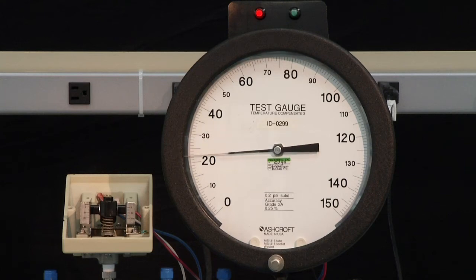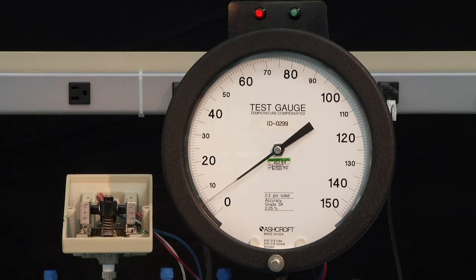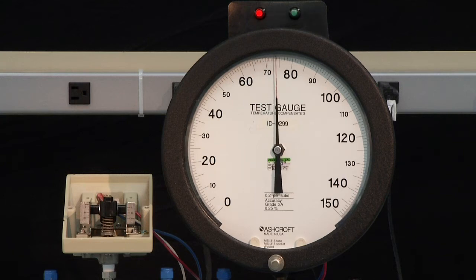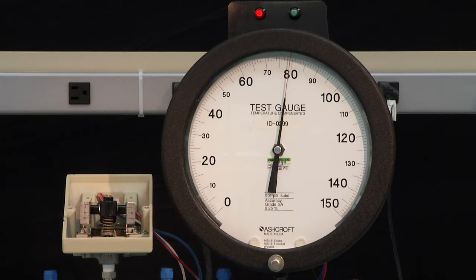We want to verify our set point by measuring it three times. We always go back to zero. And then we raise the pressure up to just before our anticipated set point, which we set up to 80, and then we slowly approach 80 and we should see the activation right on 80.